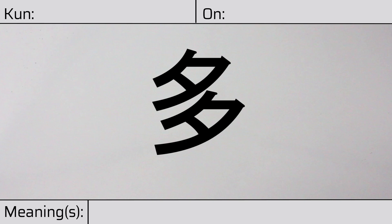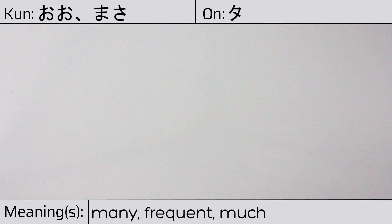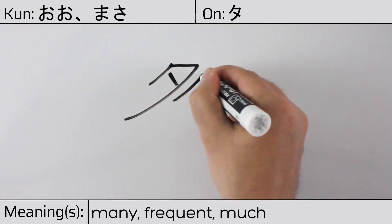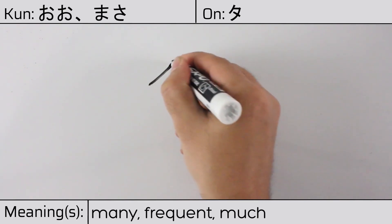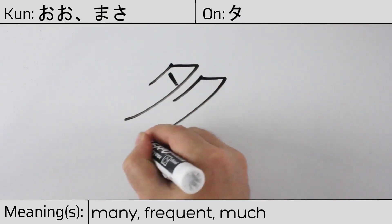Welcome to this lesson on Japanese kanji. Today, we'll be discussing this character. This kanji has kunyomi or Japanese readings of o or masa, and it has an onyomi or Chinese reading of ta. This character has the meanings many, frequent, or much. Here is the stroke order.